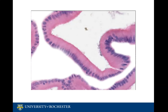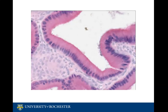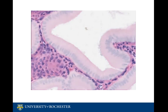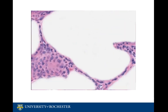Directly deep to the surface epithelium is the lamina propria. The lamina propria is a layer of loose connective tissue. Within this layer one can identify lymphatics, blood vessels, collagen fibers, fibroblasts, and sometimes chronic inflammatory cells.